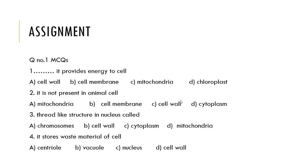MCQ number 2: which structure is not present in animal cells? Option A: cell membrane, Option B: cell wall, Option C: cytoplasm. The correct option is cell wall, which is not present in animal cells.